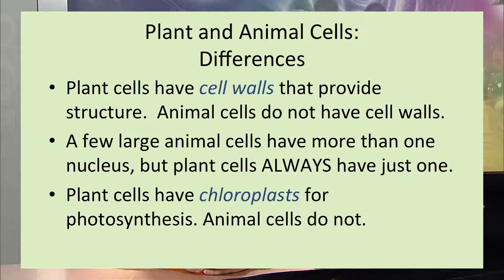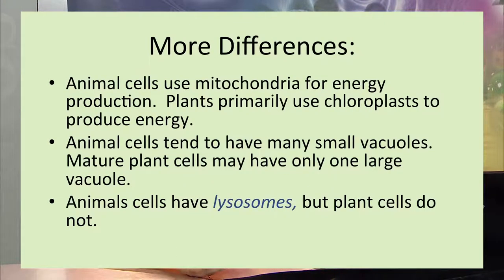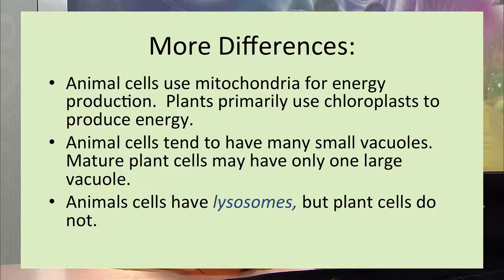Plant cells have a cell wall that provides structure, while animal cells do not. A few large animal cells may have more than one nucleus, but plant cells always have just one. Plant cells have chloroplasts for photosynthesis, but animal cells do not. Animal cells use mitochondria for energy production while plant cells use chloroplasts. Animal cells have many small vacuoles, but plant cells have one large vacuole. Animal cells have lysosomes containing destructive enzymes, but plant cells do not have these membrane-bound organelles.